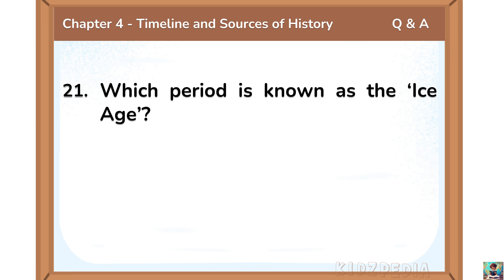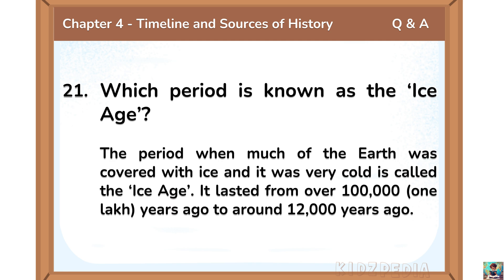Which period is known as the Ice Age? The period when much of the earth was covered with ice and it was very cold is called the Ice Age. It lasted from over 1 lakh years ago to around 12,000 years ago.